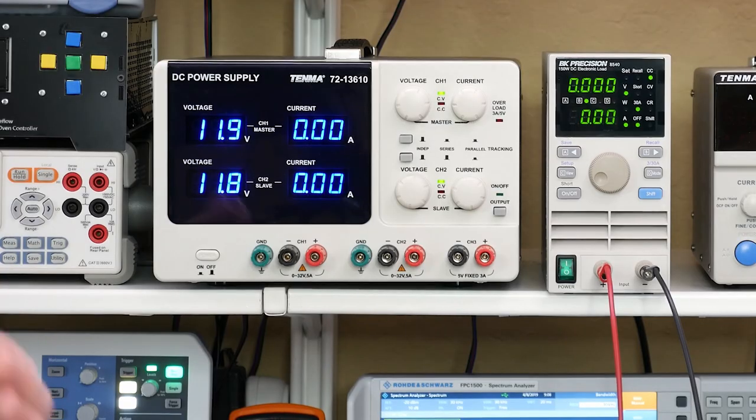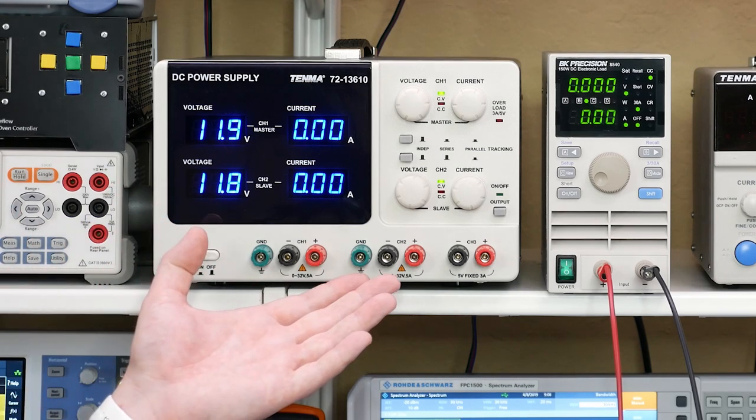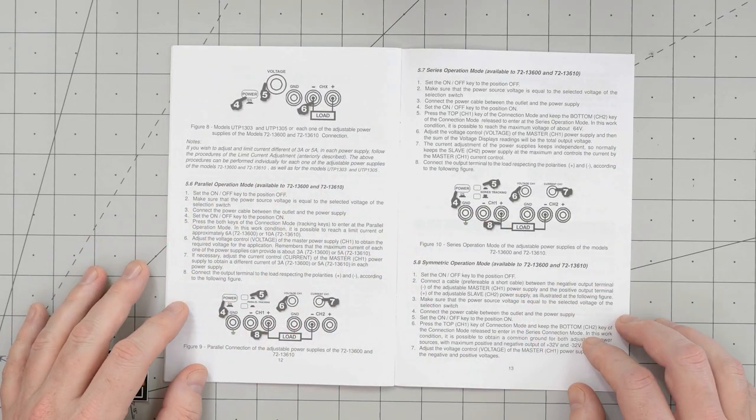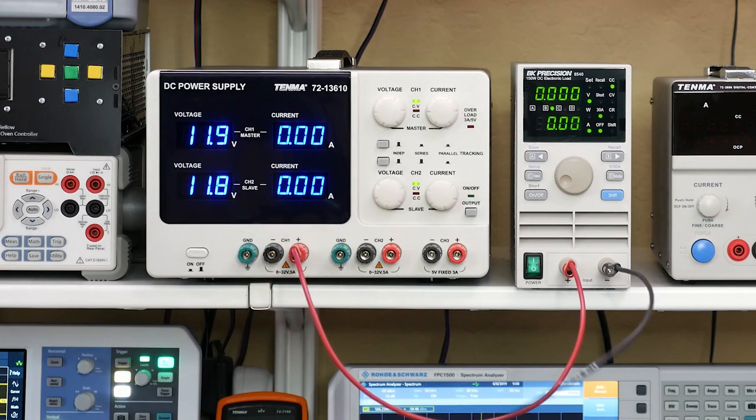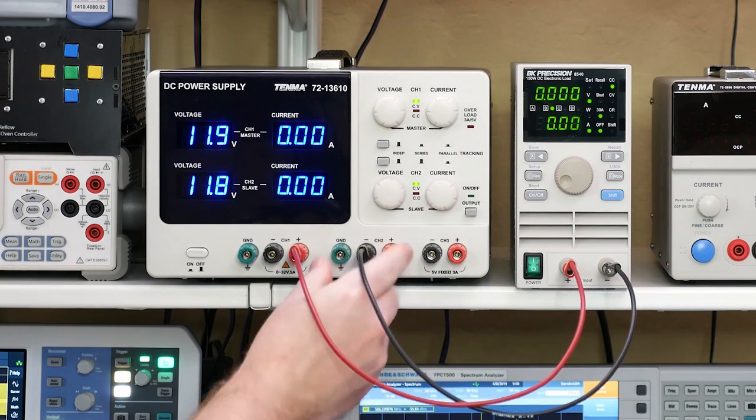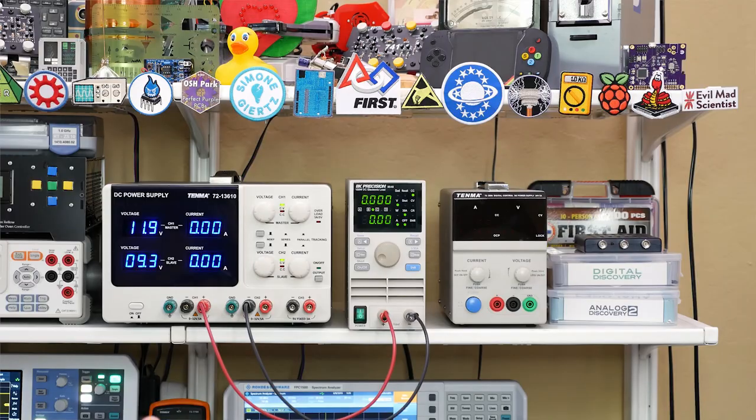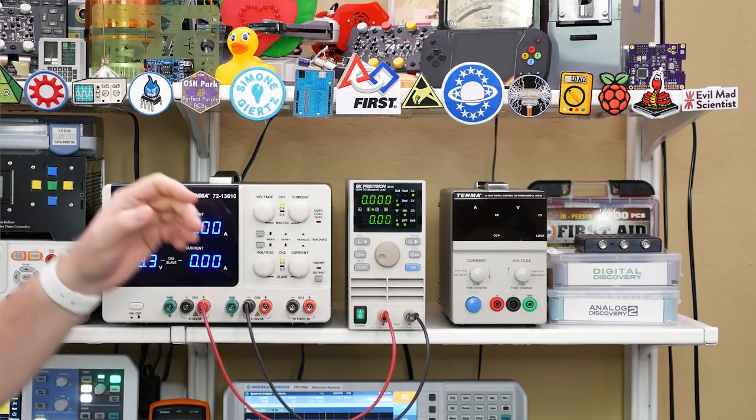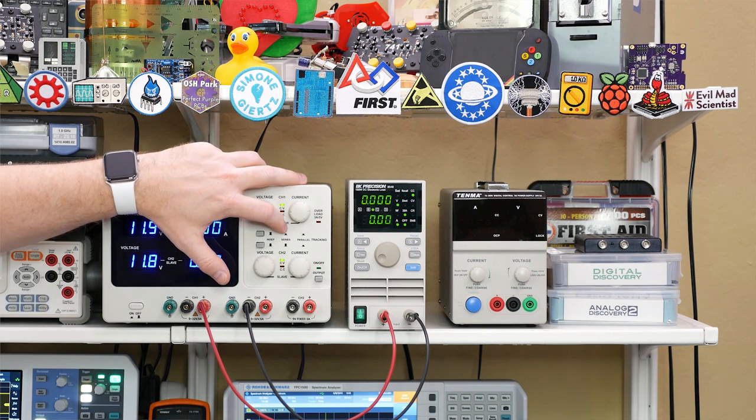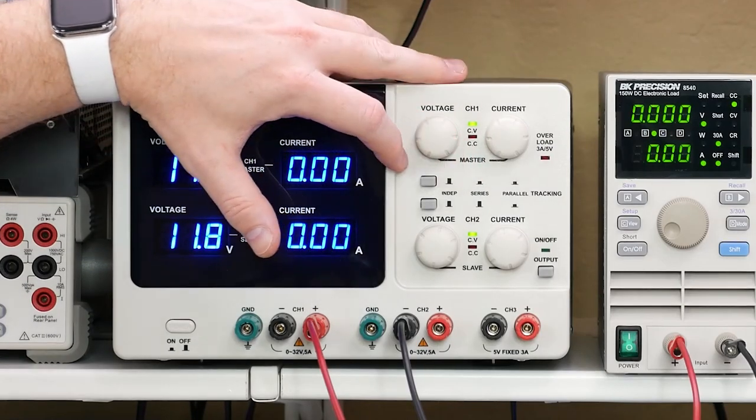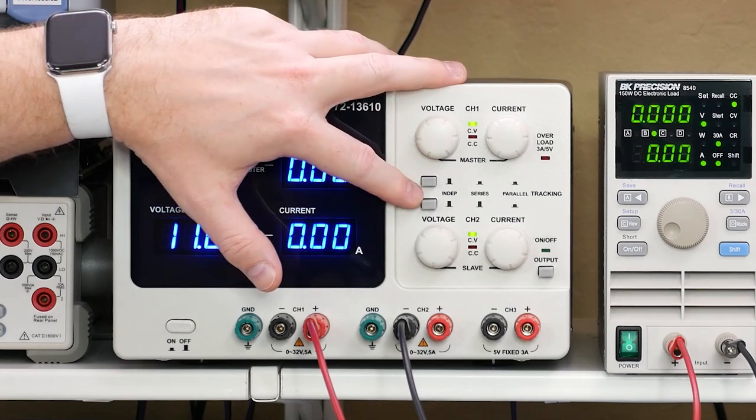When using series or parallel mode you'll use a combination of the banana jacks. Double check your supplies manual to know which to use. For this supply we connect channel 1 to the positive and channel 2 to the negative. And here I'm connecting to my electronic load but you would connect that to whatever it is you want to power. First I'm going to make sure that the output is off and then I'm going to push in one of these two switches. If I look at the diagram it says that for series one button needs to be in and the other needs to be out.